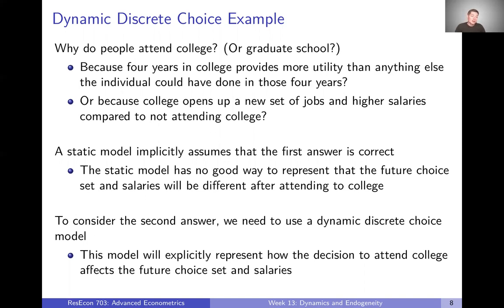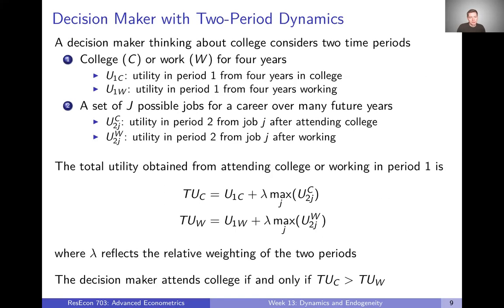If we want to add that to our model, we're going to need to use a dynamic discrete choice model to explicitly represent how the decision to attend college affects future choice sets, salaries, utilities — all of that. So let's get a math model going to say this more formally.